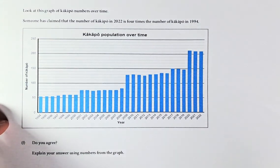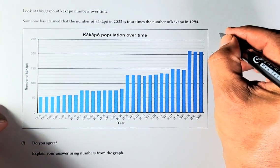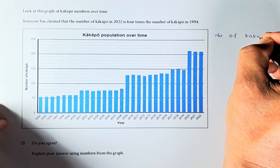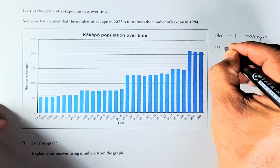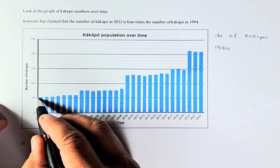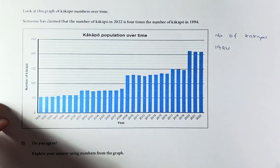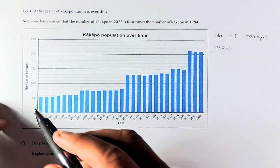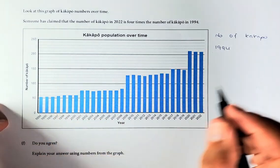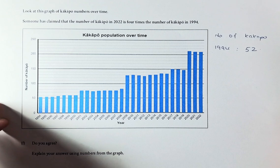As I said before, when you do statistics, you need to justify with numbers. If you look at the graph, each interval represents 10 — we've got 50 to 100 with 4 lines, so each of them represents 10. The number at 1994 is slightly more than 50, so we reckon it's going to be 52 Kakapos in 1994.